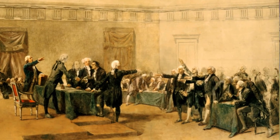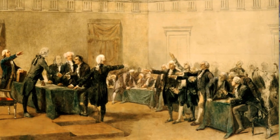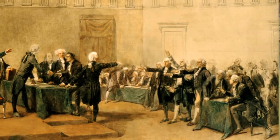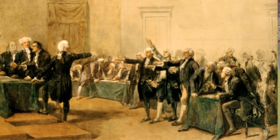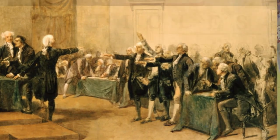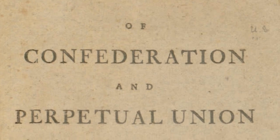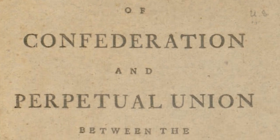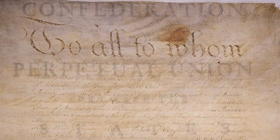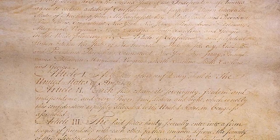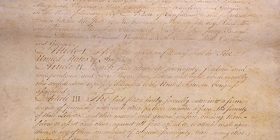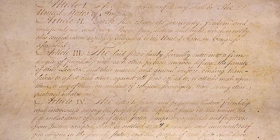The first national government created in the United States was under the Articles of Confederation. The Articles of Confederation were adopted by the Second Continental Congress in 1777 and established a confederation of the states — a loose friendship between the states where very little power was granted to the central government.